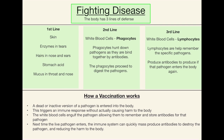This is how a vaccination works. A dead or inactive version of a pathogen is entered into the body — this triggers an immune response without actually causing harm because the introduced pathogen is dead or inactive. The white blood cells, phagocytes, engulf the pathogen, allowing them to remember and store antibodies for it — that is where the lymphocytes come in. Next time the live pathogen enters and would actually cause harm, the immune system can quickly mass-produce those antibodies to destroy the pathogen and reduce harm to the body.